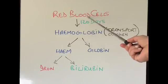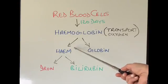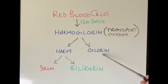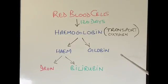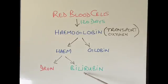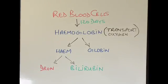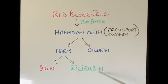Once the hemoglobin comes out of the dying red blood cells, it breaks down into two things: one is called heme, and one is called globin. Globin is a protein which goes back into our blood to make new hemoglobin, whereas heme breaks down into iron and a yellow-green substance called bilirubin. This is the substance which, when its levels are very high, makes us look yellow on our skin and in our eyes.